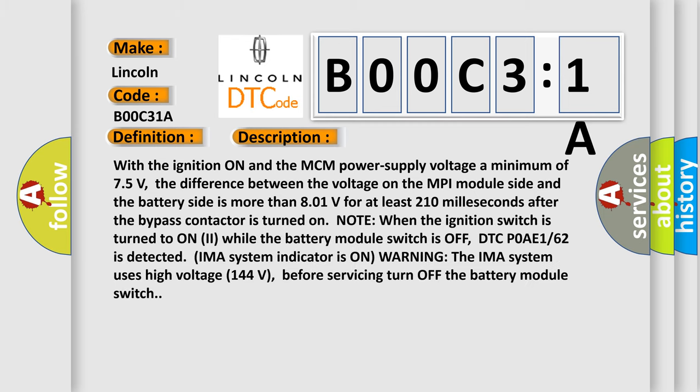With the ignition on and the MCM power supply voltage a minimum of 7.5 volts, the difference between the voltage on the MPI module side and the battery side is more than 8.01 volts for at least 210 milliseconds after the bypass contactor is turned on. Note: when the ignition switch is turned to on while the battery module switch is off, DTC P0AE162 is detected. IMAS system indicator is on. Warning: the IMA system uses high voltage (144 V) before servicing, turn off the battery module switch.